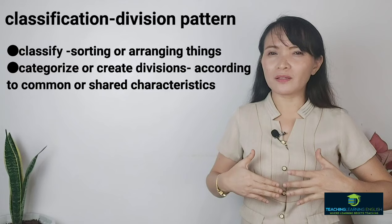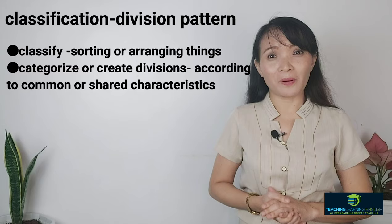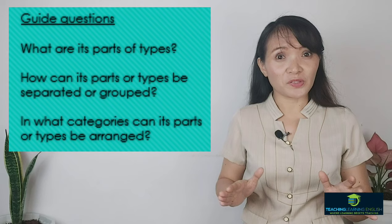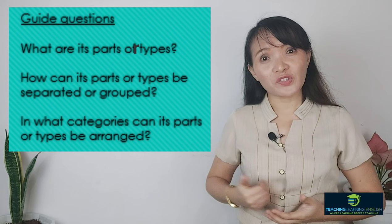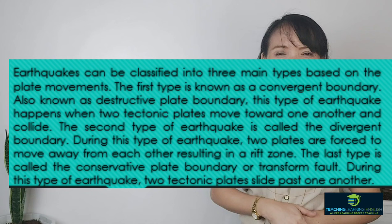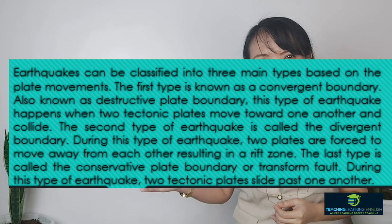The eighth pattern is classification and division. When you classify, you try to sort or arrange things into groups, categories, or divisions according to their common or shared characteristics. In English, there are many topics — writing itself is classified into two: academic and non-academic writing. Guide questions include: what are its parts or types? How can its parts or types be separated or grouped? In what categories can its parts or types be arranged? In the example paragraph, signal words include 'first,' 'also known as,' 'second,' and 'the last.'